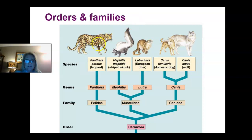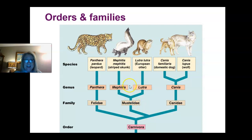In the order Carnivora, we have lots of carnivores. Each one of these organisms is a true carnivore — this leopard/panther, skunks, otters, domestic dogs, and wild wolves. Their families differ: the Canidae family, the Mustelidae family, and the Felidae family — roughly the dog family, this other family, and the cat family. They separate further into different genera: Canis, Lutra, Mephitis, Panthera — and then into different species.